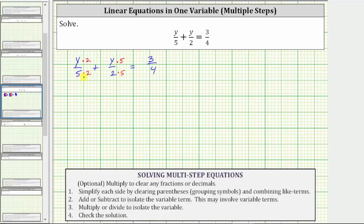Notice now we do have a common denominator of 10. We have 2y over 10 plus 5y over 10 equals 3 fourths. If it's helpful, we could write 2y over 10 as two-tenths y and 5y over 10 as five-tenths y. Let's go ahead and do this. This gives us two-tenths y plus five-tenths y equals 3 fourths.